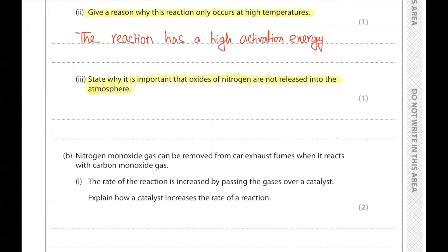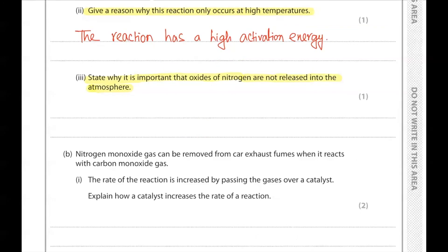State why it is important that oxides of nitrogen are not released into the atmosphere. Oxides of nitrogen can cause acid rain and can cause respiratory problems because they can become acidic.